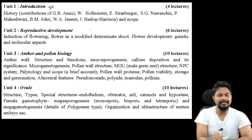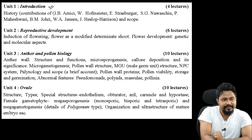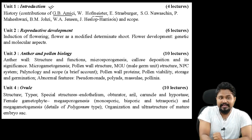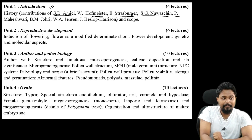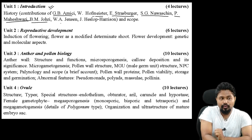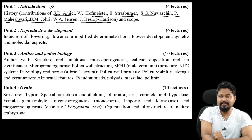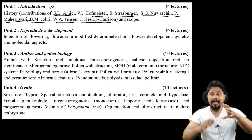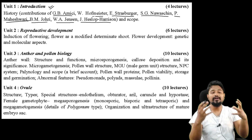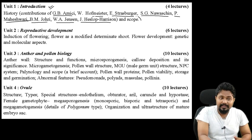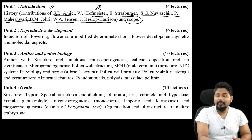The key scientists contributing to reproductive biology include: Hofmeister, Strasburger, Nawaschin, P. Maheshwari, B.M. Johri, W.A. Jensen, and Heslop-Harrison. Unit 1 covers the scope and contributions of these scientists to reproductive biology.